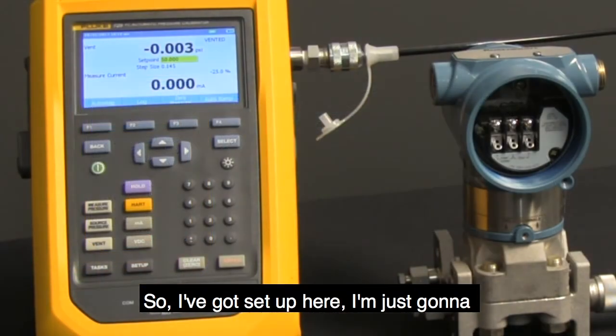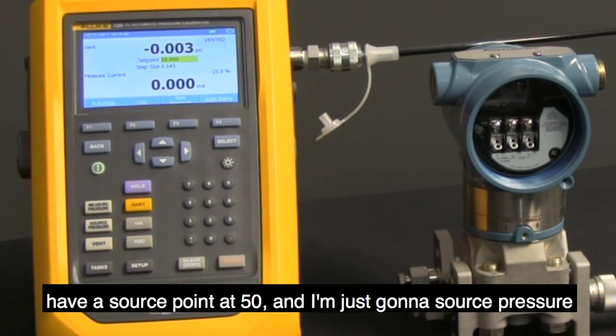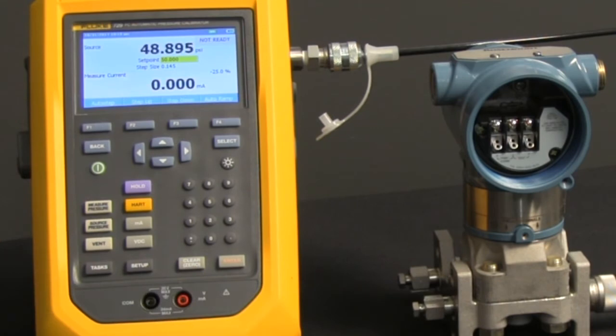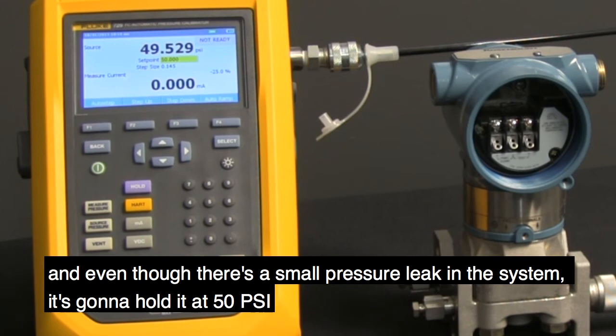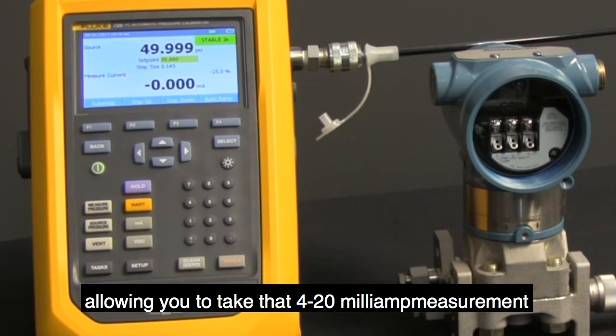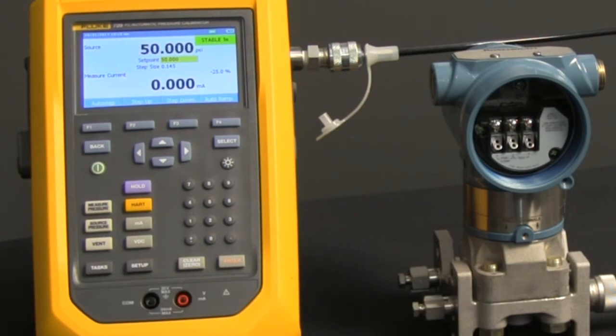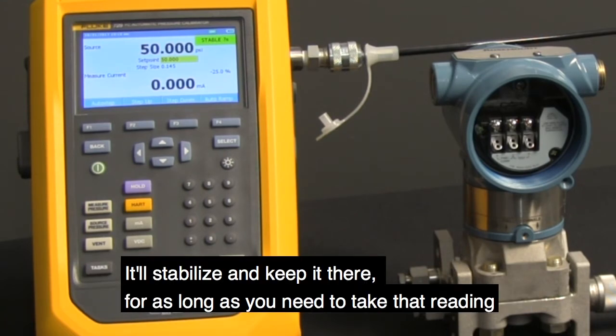I've got it set up here with a set point at 50, and I'm just going to source pressure. The 729 is going to bring that pressure up to 50, and even though there's a small pressure leak in the system, it's going to hold it at 50 psi, allowing you to take that 4-20 milliamp measurement. It'll stabilize and keep it there for as long as you need to take that reading.